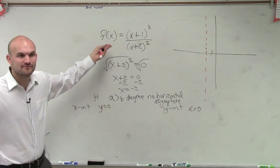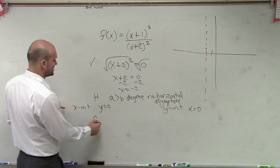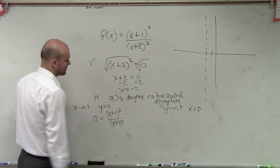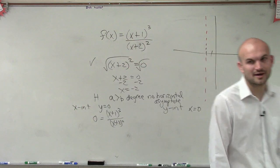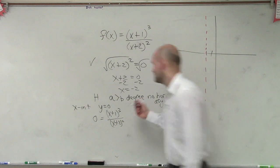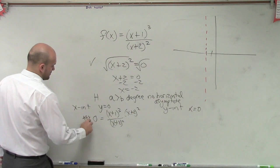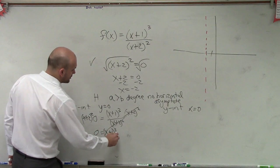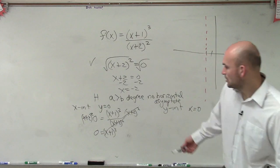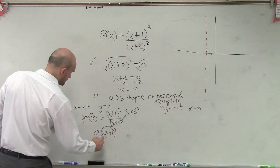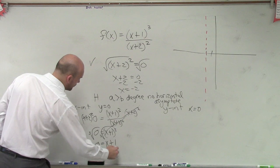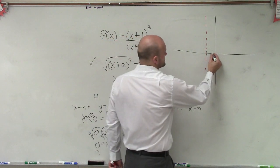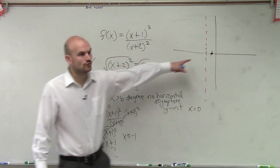To plug y equals 0 — I know I don't have a y, I have an f of x, but y and f of x are both the output values — so we say 0 equals x plus 1 cubed over x plus 2 squared. To solve for x, we need to get the x plus 2 off the bottom, so I multiply by x plus 2 squared on both sides. Those divide into 1, and this multiplies to 0, so I'm left with 0 equals x plus 1 cubed. Then I cube root both sides and get 0 equals x plus 1. Subtract 1: my x-intercept is x equals negative 1. So the point is negative 1 comma 0.